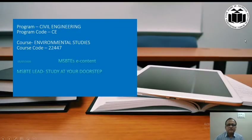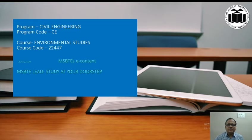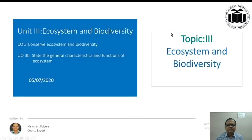Dear student friends, welcome to the digital platform of e-content provided by MSBTE, i.e., Maharashtra State Board of Technical Education. Today's subject of discussion is Environmental Studies, course code 22447. Ecosystem and Biodiversity is unit number 3 which we are going to deal with. The concerned Course Outcome is Conserve Ecosystem and Biodiversity, and the Learning Outcome is State the General Characteristics and Functions of Ecosystem.